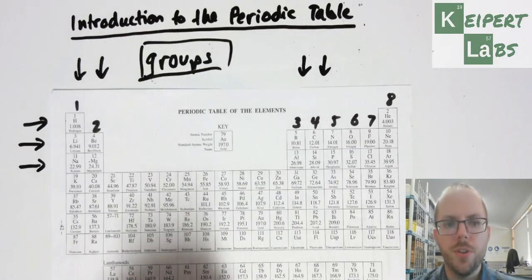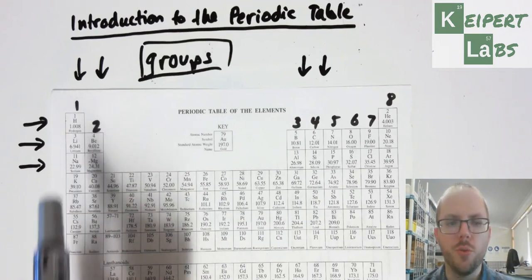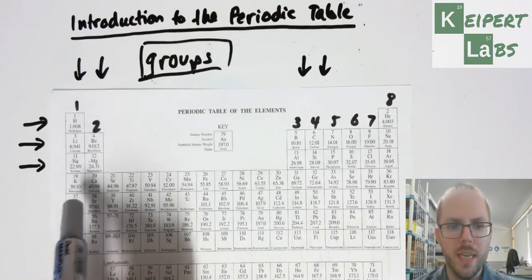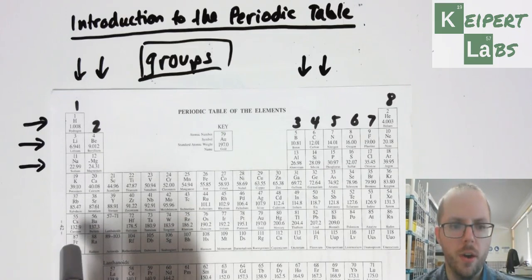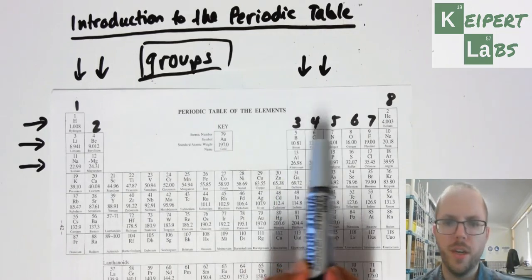We give these groups a number, and then we can refer to elements that are in these columns by their group number. So everything in this column on the far left is in group one - whether it's potassium (K), sodium (Na), or caesium (Cs), we say that they're all group one elements.